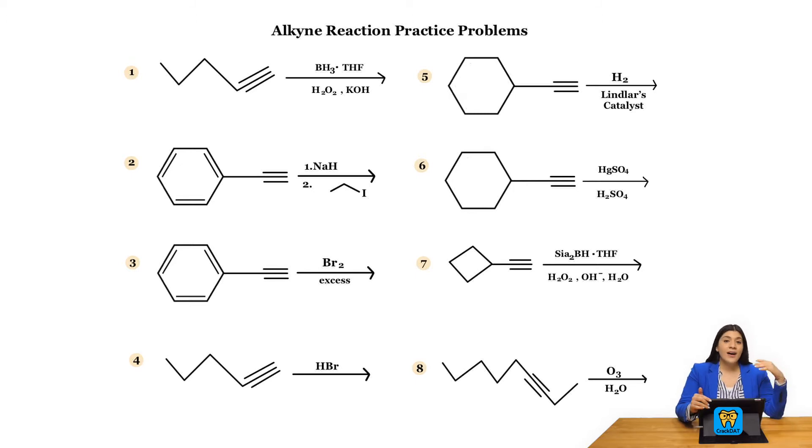Get a piece of paper, get a pen, make sure to do all these. And of course, if you need to write out the mechanism, if that helps you predict the products, by all means, try to do that.